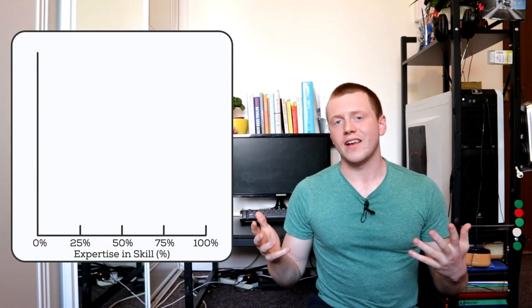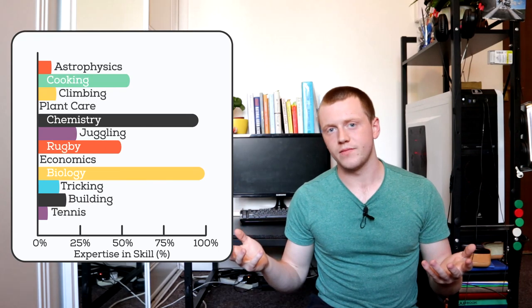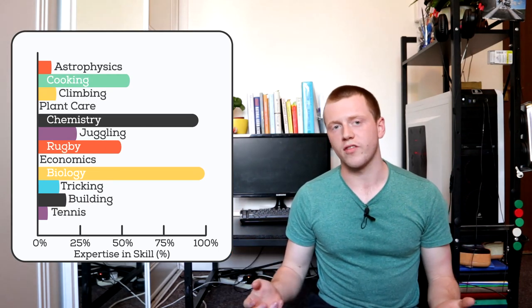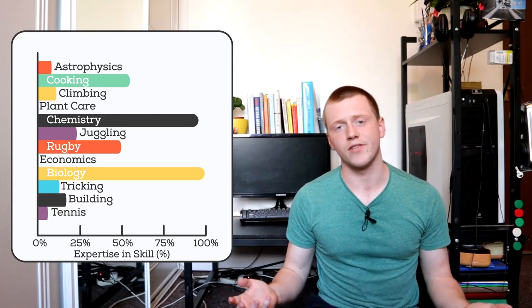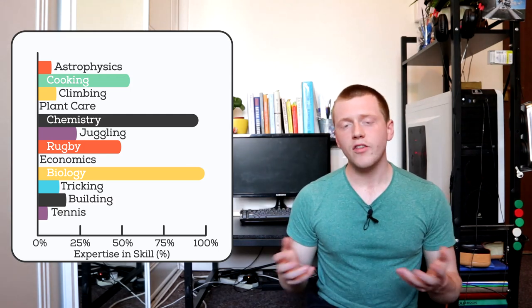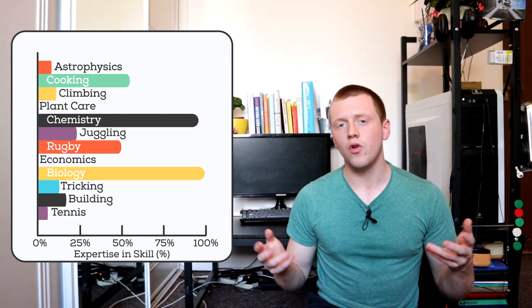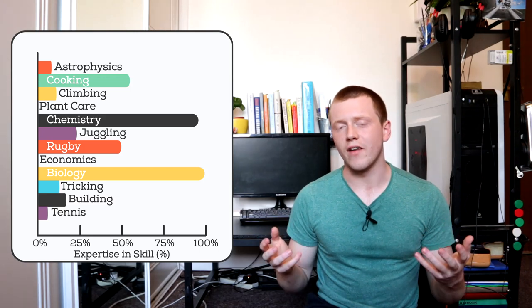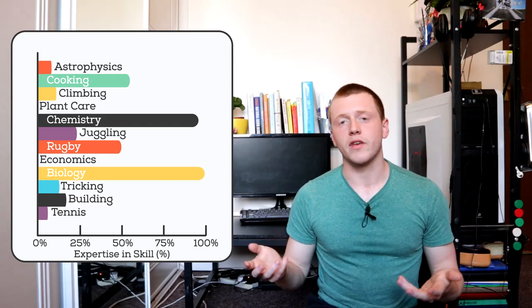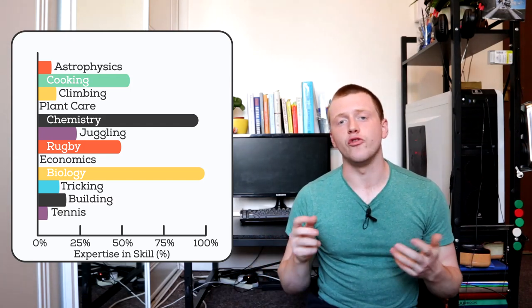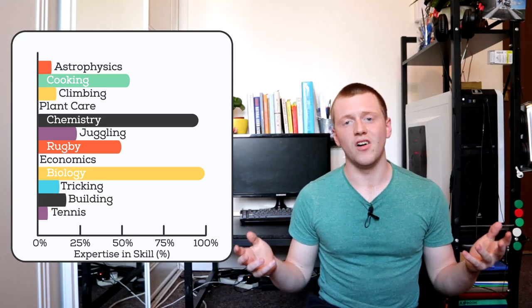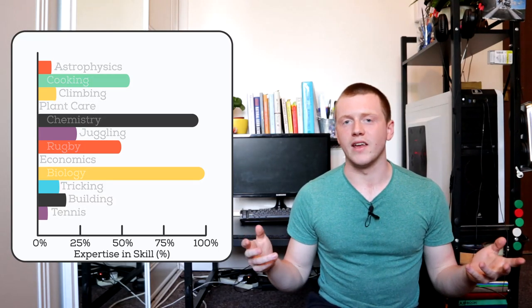Let's start by looking at a theoretical bar graph for an expert. Now obviously a real bar graph for all of the skills in a person's life would be much bigger than this. But I don't have time to put five thousand entries into a bar graph so this will do. As you can see an expert has one or maybe two skills or knowledge areas that they are extremely proficient at. They will also most likely have some skills that they are capable of doing at a normal level. Everyday tasks like cooking, using a computer or pretending that you're listening in an important meeting.